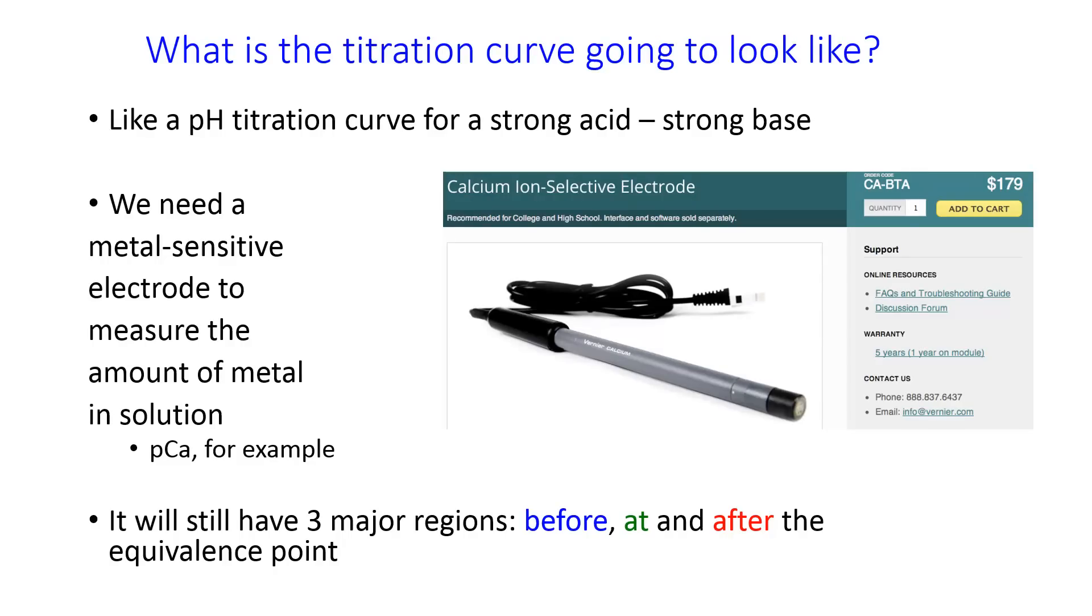So when we do a titration with EDTA, the curve is going to look just like the strong acid, strong base titration curves that we saw before. You can either build this curve with an indicator electrode, or you can build it with some sort of indicator like you did in experiment 5. If you really want to make a curve though, you need the electrode. And you can buy ion-selective electrodes for several metals.